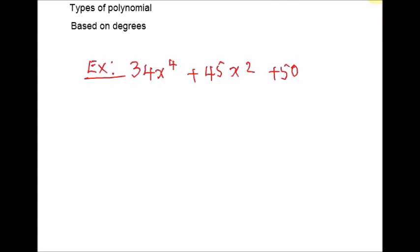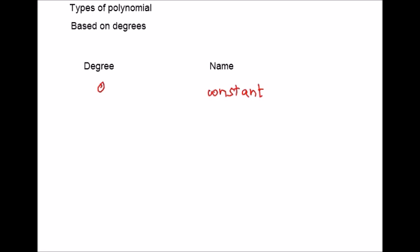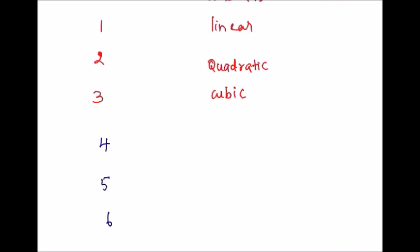Let us now discuss types of polynomials based on degree. If the highest degree of an expression is 0, you can say that it is a constant polynomial. If the degree is 1, the expression is a linear expression. If the degree is 2, the polynomial is a quadratic expression. If the highest degree is 3, the expression is cubic. If the highest degree is 4, the expression is quartic. If it is 5, we say that it is a quintic.